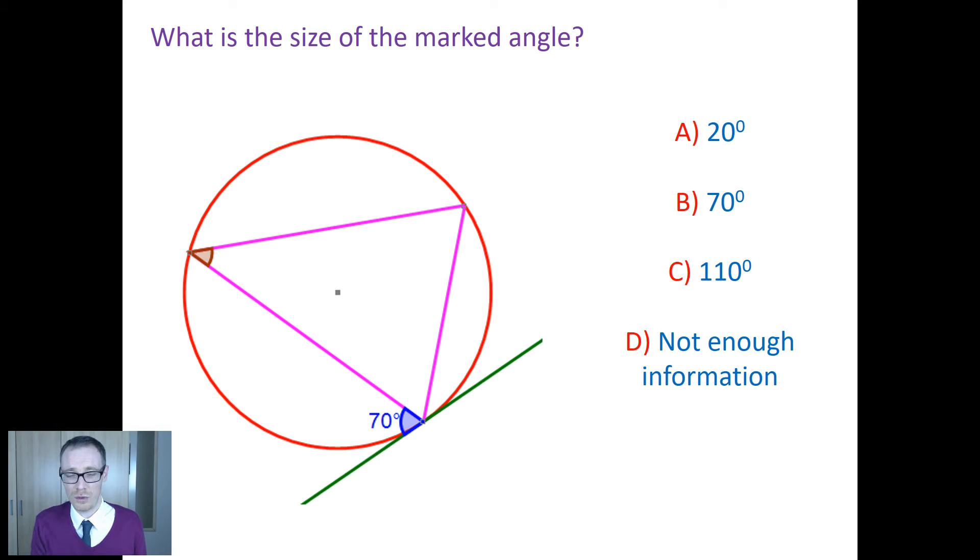Or B, oh they look a bit like alternate angles. Is there some parallel lines in there? Or C, isn't it something to do with the opposite angles add up to 180 degrees? You've got to rule all of those out to conclude that D is the right answer.